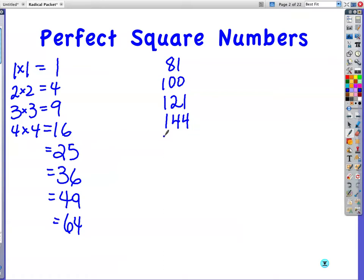You've got 15 times 15. Wait a minute, did I miss one? I missed a couple. 144 is 12 times 12. Well, 13 times 13 is 169. 14 times 14 is 196. 15 times 15 is 225.